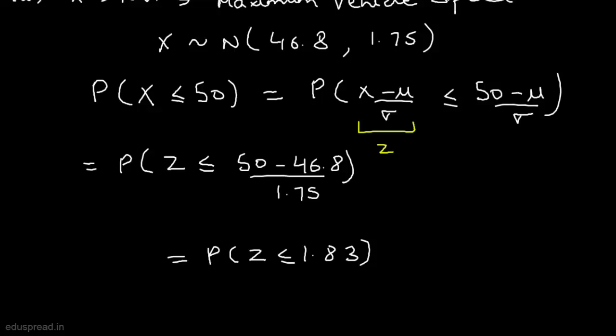We can find this probability from the standard normal table. From the standard normal table, we find that this probability is equal to 0.9664. So the probability that x is less than or equal to 50 is 0.9664.